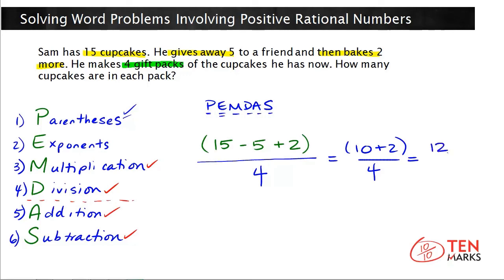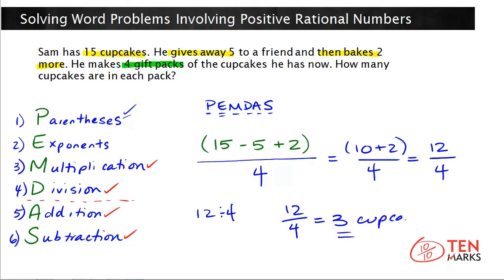Now you get twelve on top, and you have that over four. Twelve over four means twelve divided by four. So twelve over four simplifies to three, because twelve divided by four equals three. This means that Sam can put three cupcakes in each of his gift packs if he wants to make four gift packs. Thanks for watching.